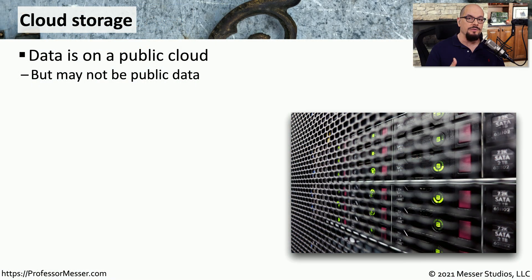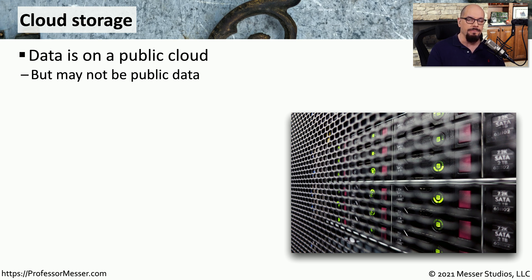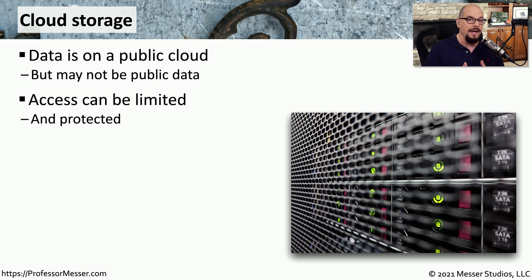As security professionals, we have to manage applications that are running in the cloud. There will be user data that is stored in the cloud. Often, this is stored in a public cloud, which means it could be on Microsoft, Amazon, Rackspace, or any other cloud provider. But the data we're putting onto these cloud services may not be public information — it may be information that we need to keep private. Because of that, we need to have controls in place that can limit who can see what type of data.